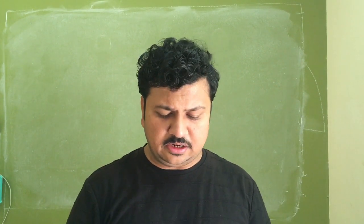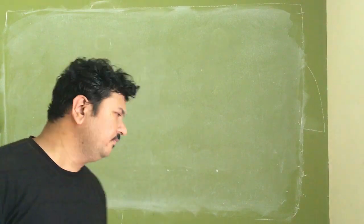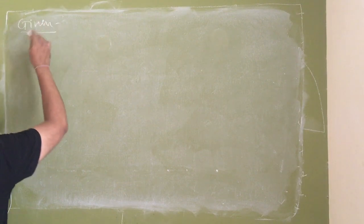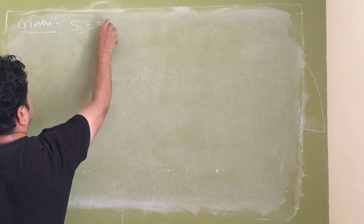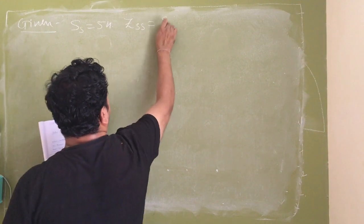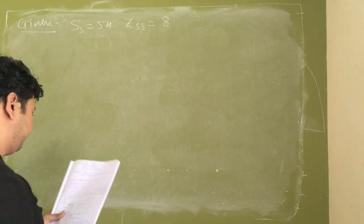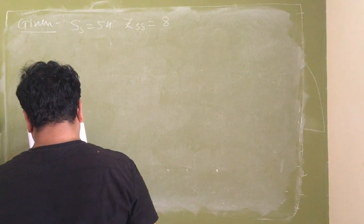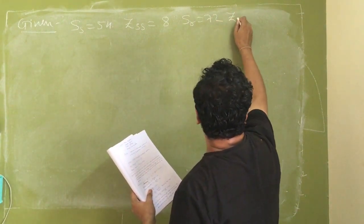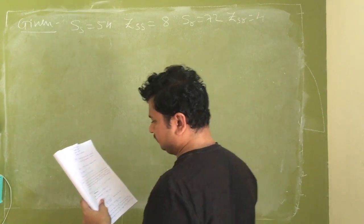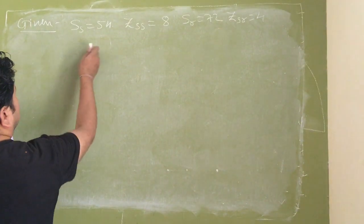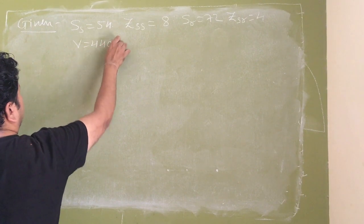The given data is: stator slots SS = 54, stator conductors per slot ZSS = 8. Don't forget the nomenclature and notations. Rotor slots SR = 72 and rotor conductors per slot ZSR = 4. Supply voltage V = 440 volts.